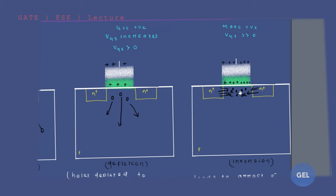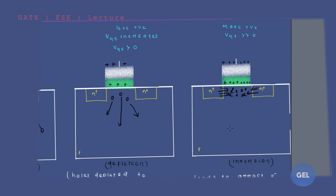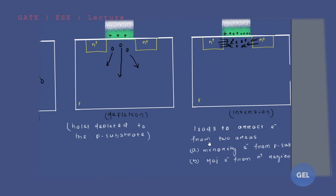A channel forms at this place because of these electrons. In P-type material, the majority is holes and the minority is electrons. So in hundred holes there will be about five electrons — those electrons will also go to this channel. The minority carriers of P-substrate also participate in the channel formation. So electrons are attracted from two areas: minority electrons from P-substrate and majority electrons from N-plus regions.